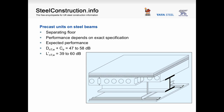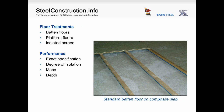A slight variation uses precast units supported on steel beams. There are many variables in practice such as beam depth, depth of precast units, type of floor treatment, and ceiling finish applied, all of which impact the performance achieved. Typical values for DnTW plus CTR would be between 47 and 58 dB, and for impact sound, LNTW between 39 and 60 dB. There are three main categories of floor treatments: a battened floor, platform floors, and isolated screed treatments. The important criteria are the degree of isolation provided, the mass of the system, and the depth of the system.